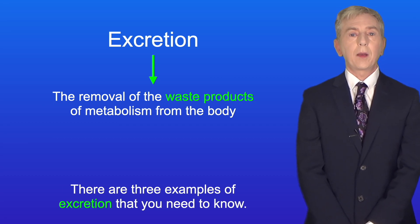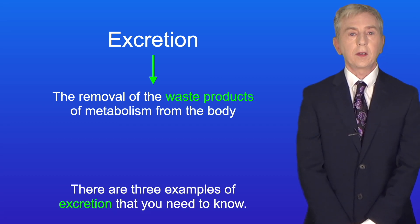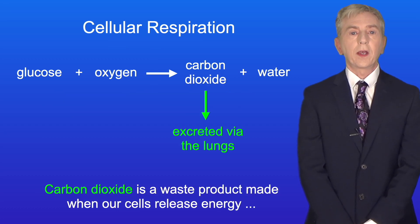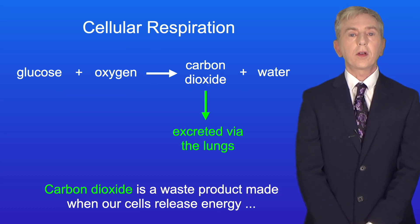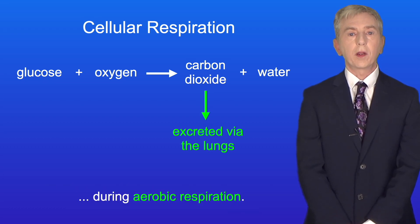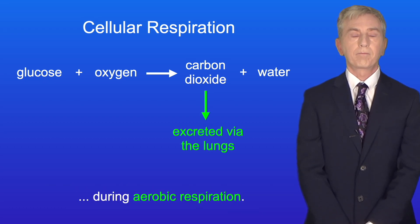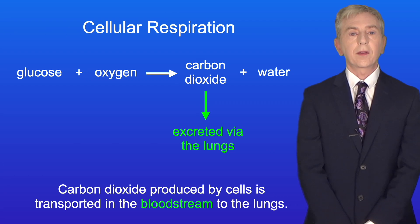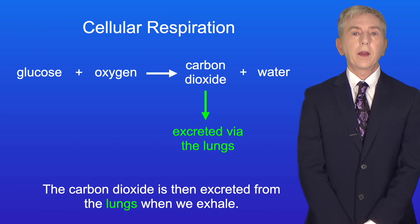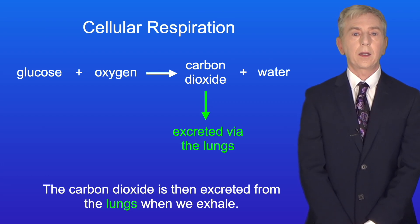There are three examples of excretion that you need to know. The first example is the gas carbon dioxide. Carbon dioxide is a waste product made when our cells release energy during aerobic respiration. Carbon dioxide produced by cells is transported in the bloodstream to the lungs, where it is then excreted when we exhale.